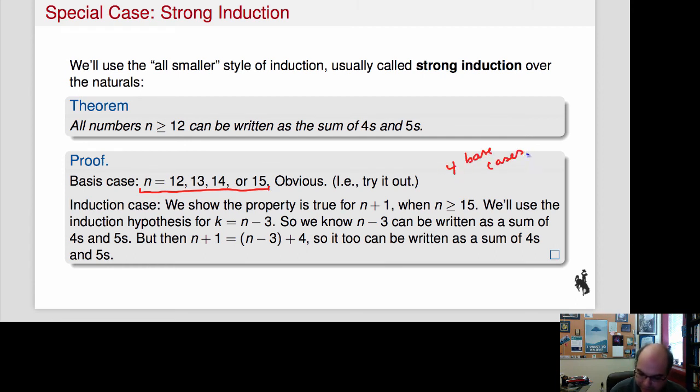Now here's why I want that. Because I want to show that the property holds for n plus 1, and it has to be greater or equal to 16. So I'm talking about n equals 16, 17, 18, and so on. So our hypothesis is actually not over n minus 1, but over k equals n minus 3. So n minus 3 can be written as the sums of 4s and 5s. Why do I know that? Because I actually know that that's true for all n smaller than n plus 1. So n minus 1, n minus 2, n minus 3, all of those.